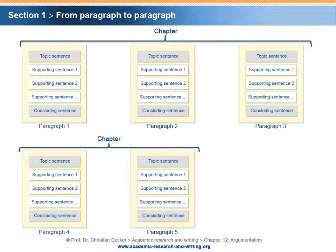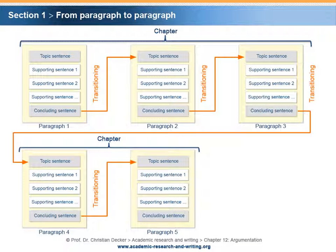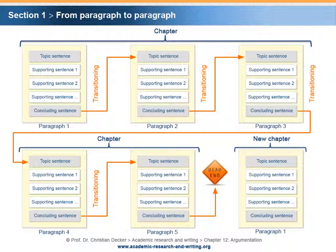A helpful technique to ensure the logical flow of paragraphs is transitioning. At a given point, it is not possible to generate a transition from one paragraph to the other and the main idea of the new paragraph cannot be connected to the previous set. Then, the new paragraph might be logically disconnected and should be placed elsewhere, maybe even in another chapter. Therefore, the method of connecting and transitioning helps testing the logic of one's argumentation and guiding the reader through the writer's thinking.